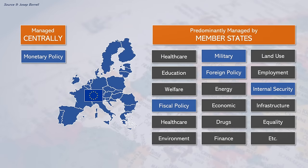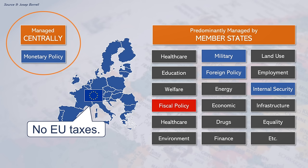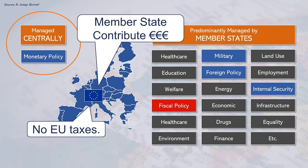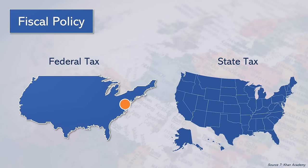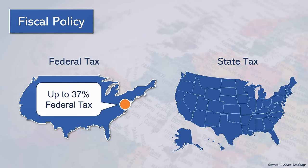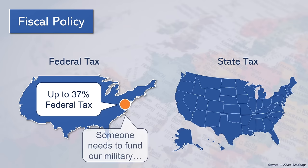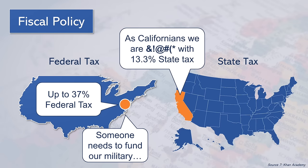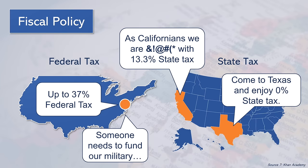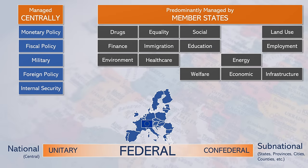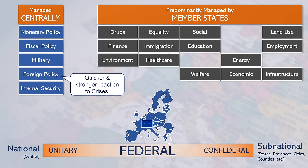Currently, only monetary policy is managed centrally in the eurozone countries. Moreover, in the present-day EU, most public goods provided by the union are financed not through federal taxes but by national contributions. In the US federal model, there is both a federal tax and a state tax — the federal tax funds central government spending such as defense, while the state tax covers local spending like education. Like the US, the EU could centralize these policy areas, meaning member states would lose some sovereignty, but the EU would be able to make quicker and more decisive decisions on the world stage.